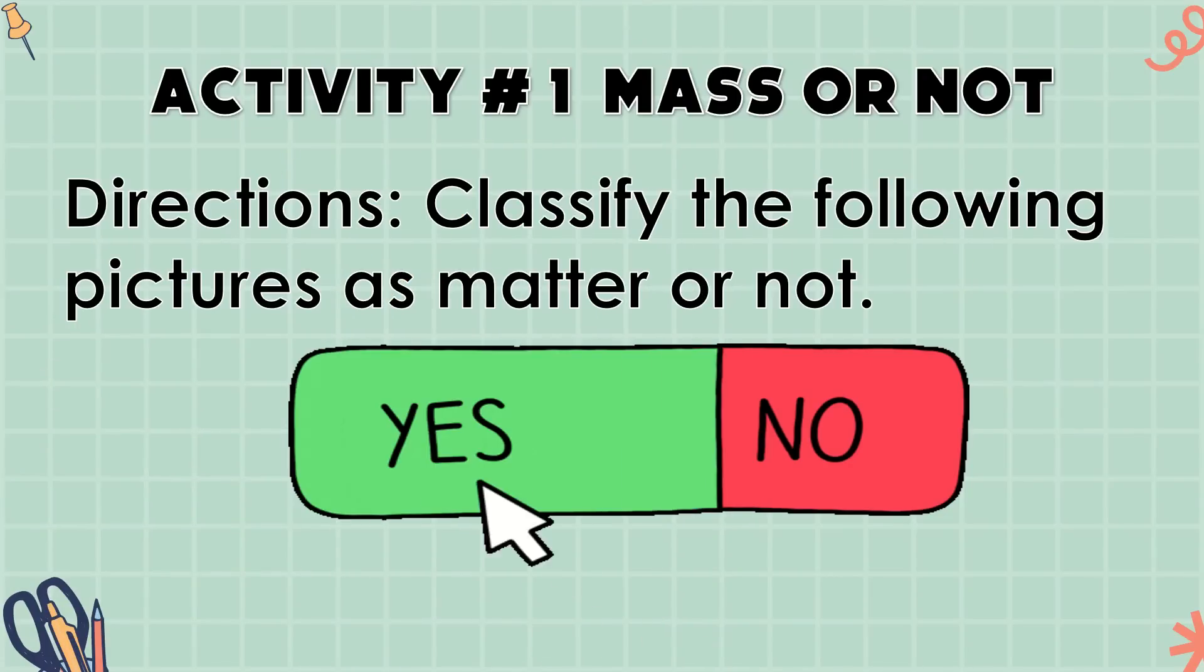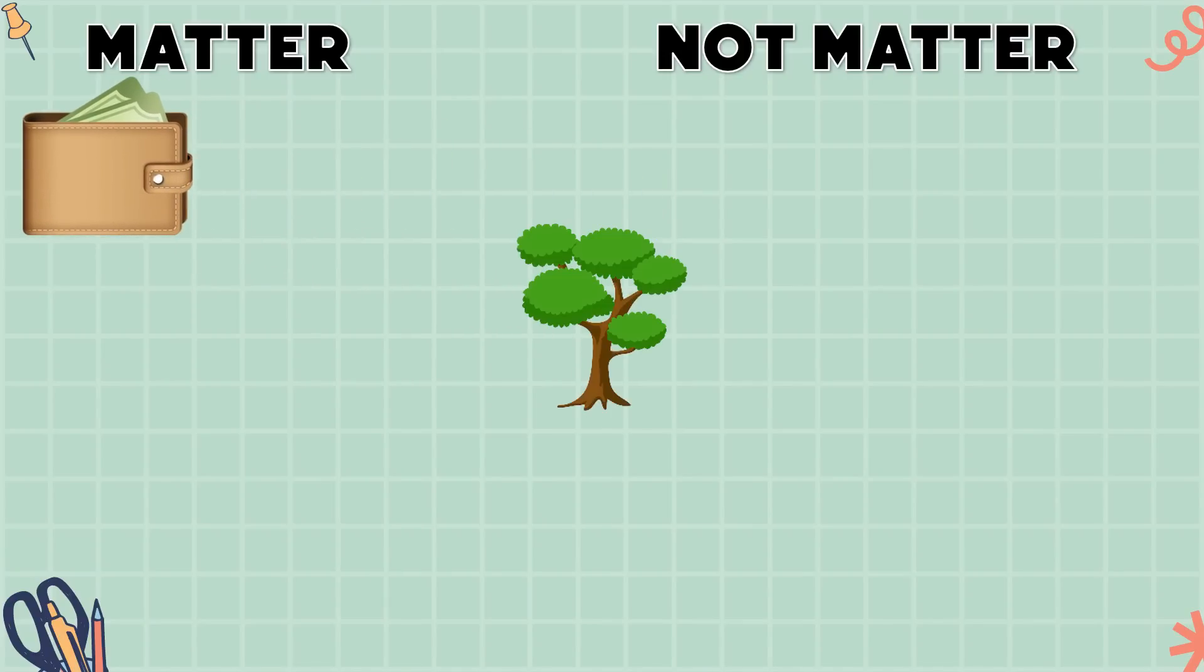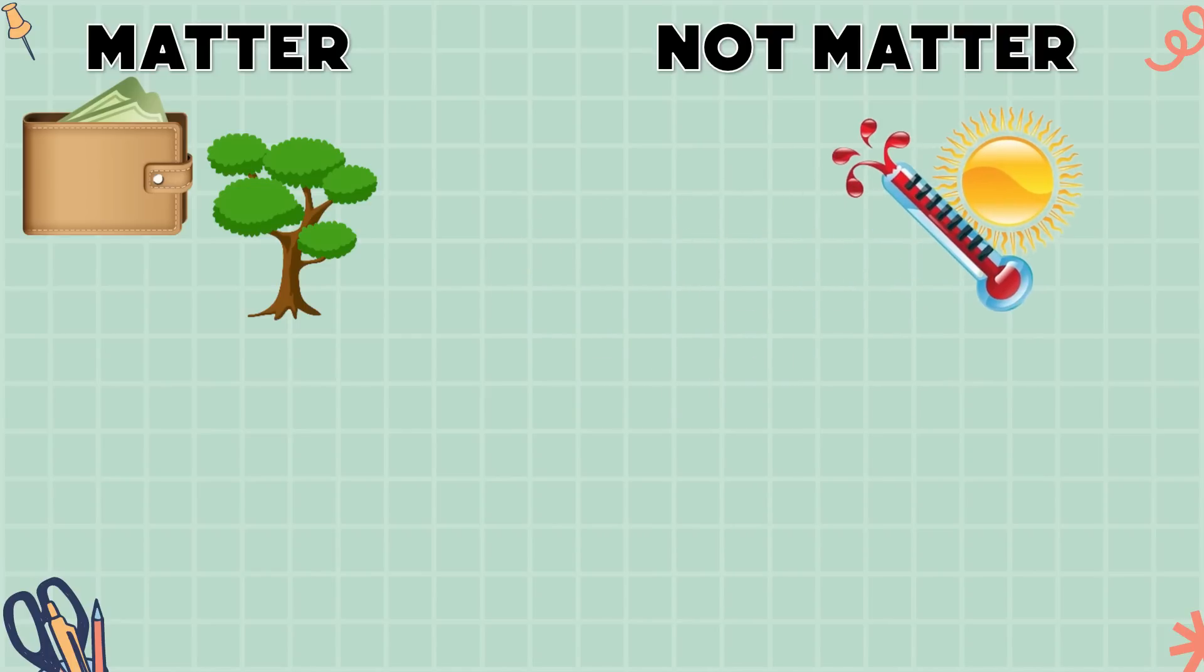Now, let us try this activity. Mass or not? Classify the following pictures as matter or not. Are you ready? Let's answer. Let's have the first picture. Wallet. Is it a matter or not? Matter. That's right. Next. Tree, o puno. Ito ba ay matter o hindi? Tama ka. Ito ay kabilang sa matter. Sumunod. Heat. Ito ba ay matter o hindi? Tama ka uli. Ito ay hindi matter.